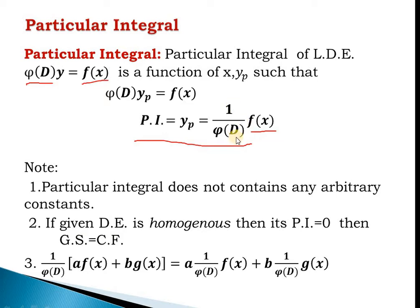We can operate 1/phi(D) as an inverse derivative operator, and we can separate it over addition or take scalar constants outside the operator. So 1/phi(D) · [a·f(x) + b·u(x)] is the same as a · 1/phi(D) · f(x) + b · 1/phi(D) · u(x). This means we can separate over addition and take scalar constants outside.